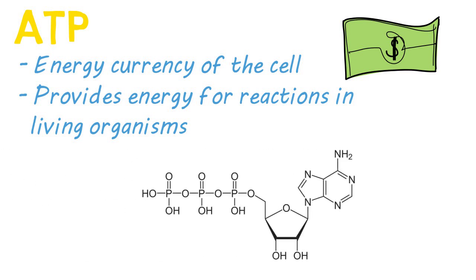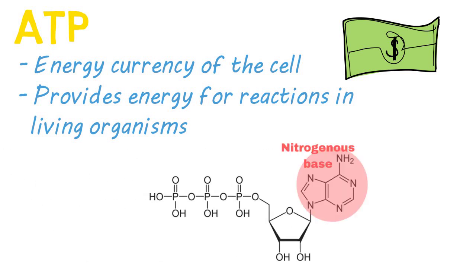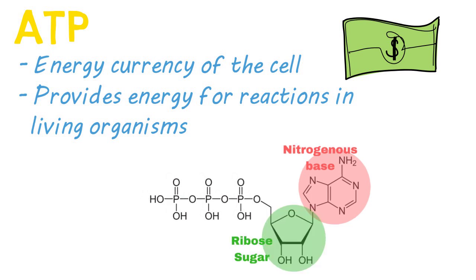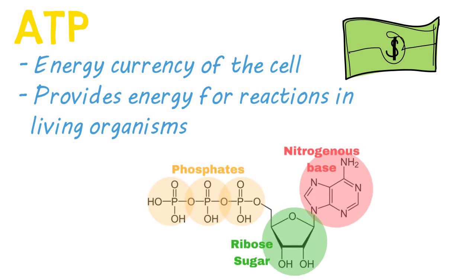ATP is made up of three main components: the nitrogenous base adenine, the sugar ribose, and three bound phosphates.